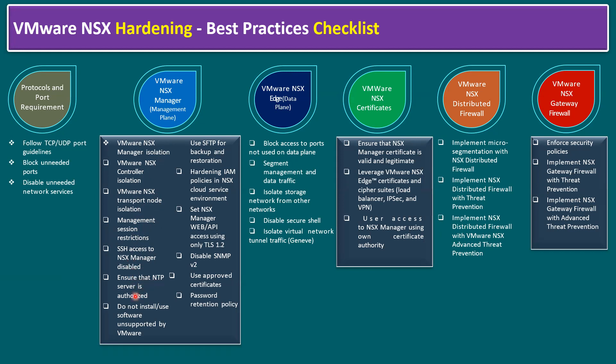Ensure that the NTP server is authorized — instead of public NTP servers, use an internal official NTP server. Do not allow installation or use of software unsupported by VMware; always use official supported software only. Use SFTP (Secure File Transfer Protocol) for backup and restoration. Third-party backup tools can also be used, such as Veritas NetBackup, CommVault, Veeam Backup, Cohesity, Rubrik, and Zerto.